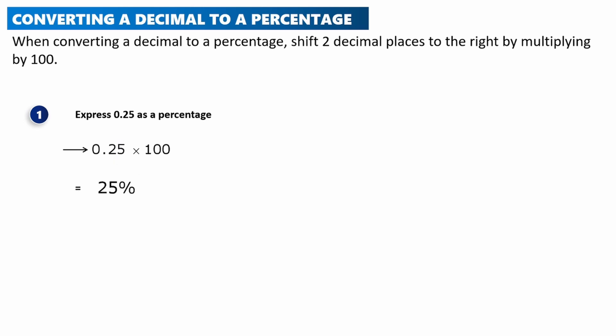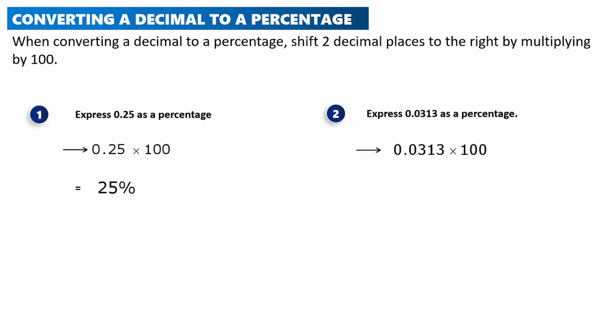When multiplying by 100, we shift the decimal point to the right twice. So the decimal point moves: 2.5, then 25 — giving us 25 percent. Another example: express 0.0313 as a percentage. We multiply by 100 and shift the decimal point twice to the right.